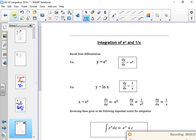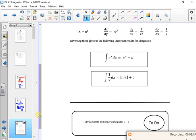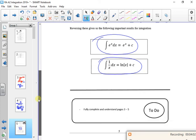So the next page is integrating e and integrating 1 over x. So what do we know? If we're integrating e, it stays the same. If we integrate 1 over x, it becomes log x. Because this is the reverse of what we did previously when we were differentiating logs. So that's how it works.